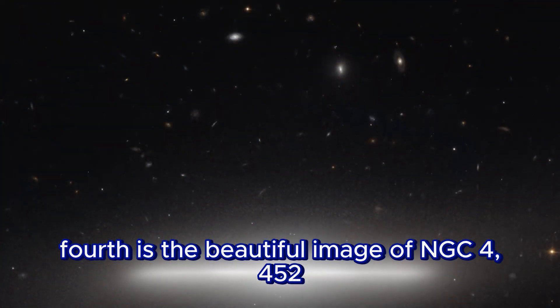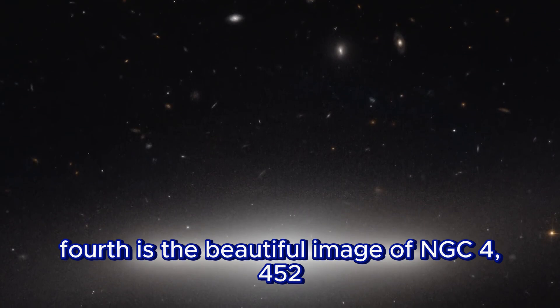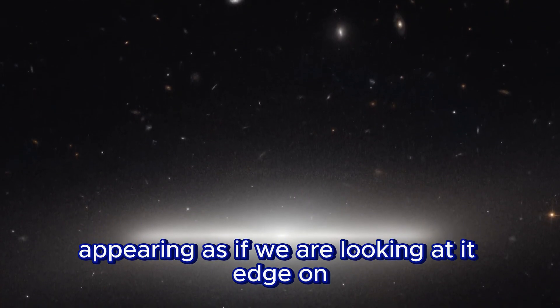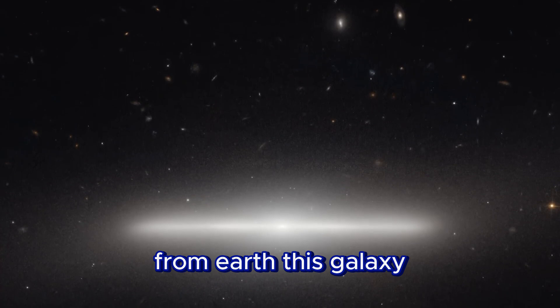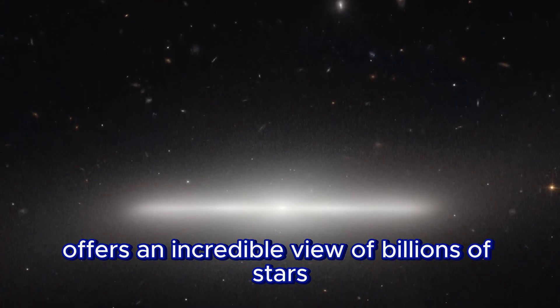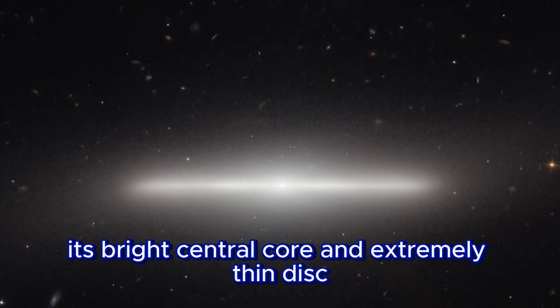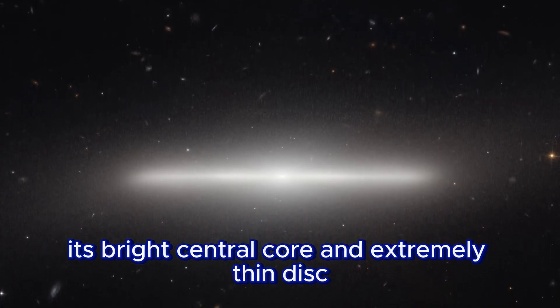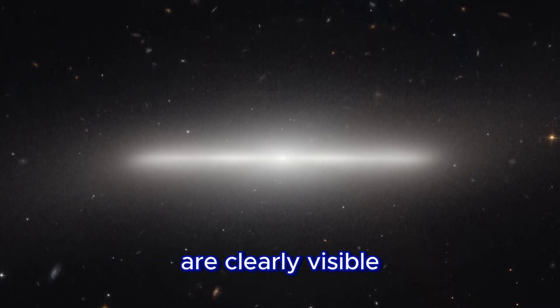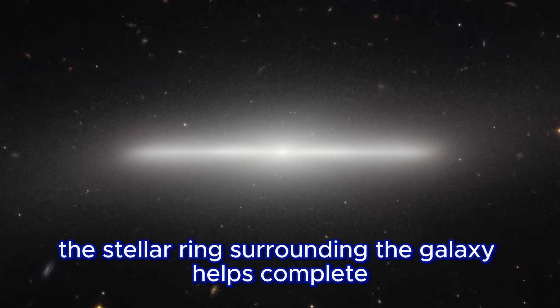Fourth is the beautiful image of NGC 4452, a thin galaxy. Appearing as if we are looking at it edge on from Earth, this galaxy offers an incredible view of billions of stars from a new perspective. Its bright central core and extremely thin disk, which looks like a perfect straight line from our viewpoint, are clearly visible. The stellar ring surrounding the galaxy helps complete the picture.